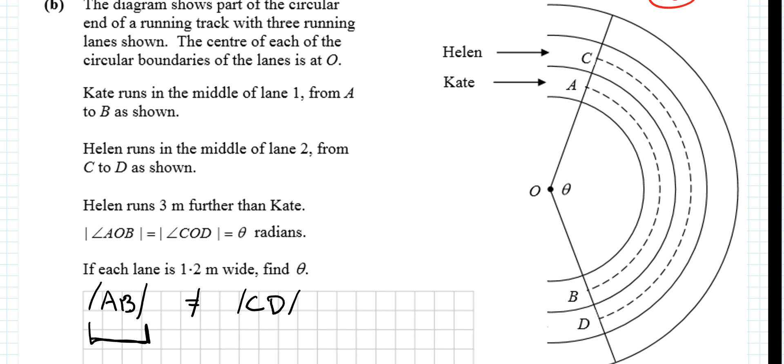This is the shorter distance. So how could I make this actually an equation? How could I get rid of the not equal to sign? Well, Kate would have to run 3 metres further. Now they happen to be equal. A to B plus 3 is equal to C to D.